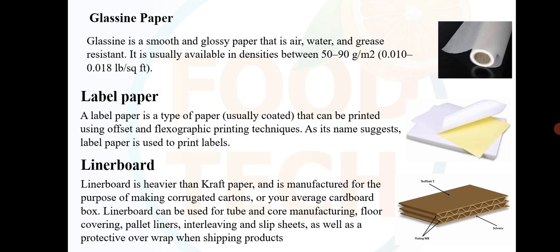Label paper is a type of paper, usually coated, that can be printed using offset and flexographic printing techniques. As its name suggests, label paper is used to print labels. Liner board is heavier than kraft paper and is manufactured for the purpose of making corrugated cartons or cardboard boxes. Liner board can be used for tube and core manufacturing, floor covering, pallet liners, interleaving and slip sheets.